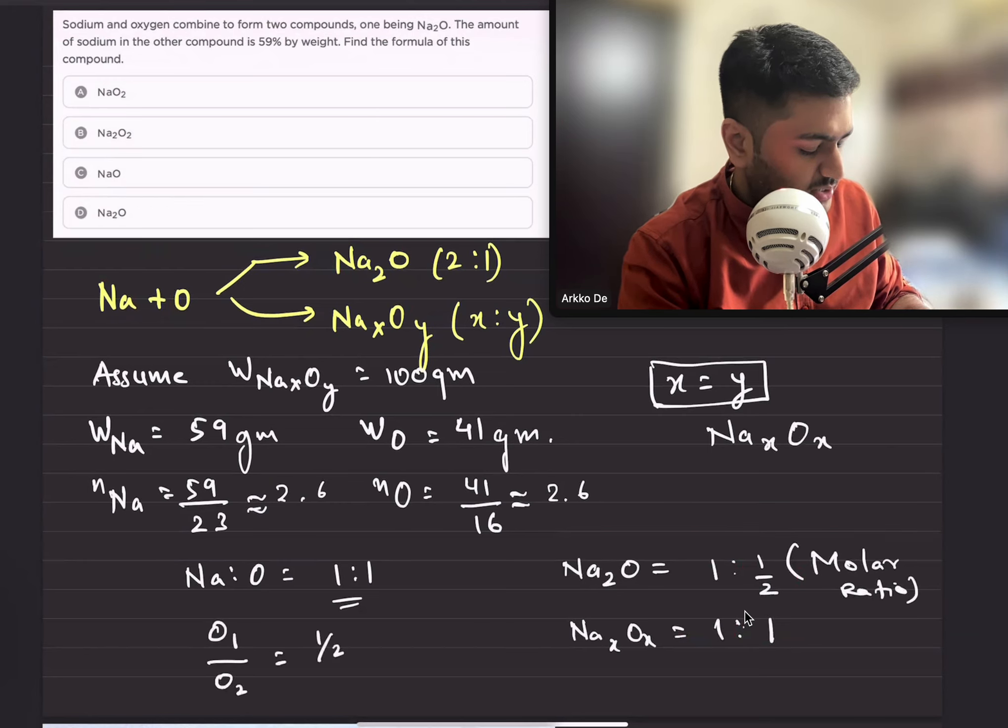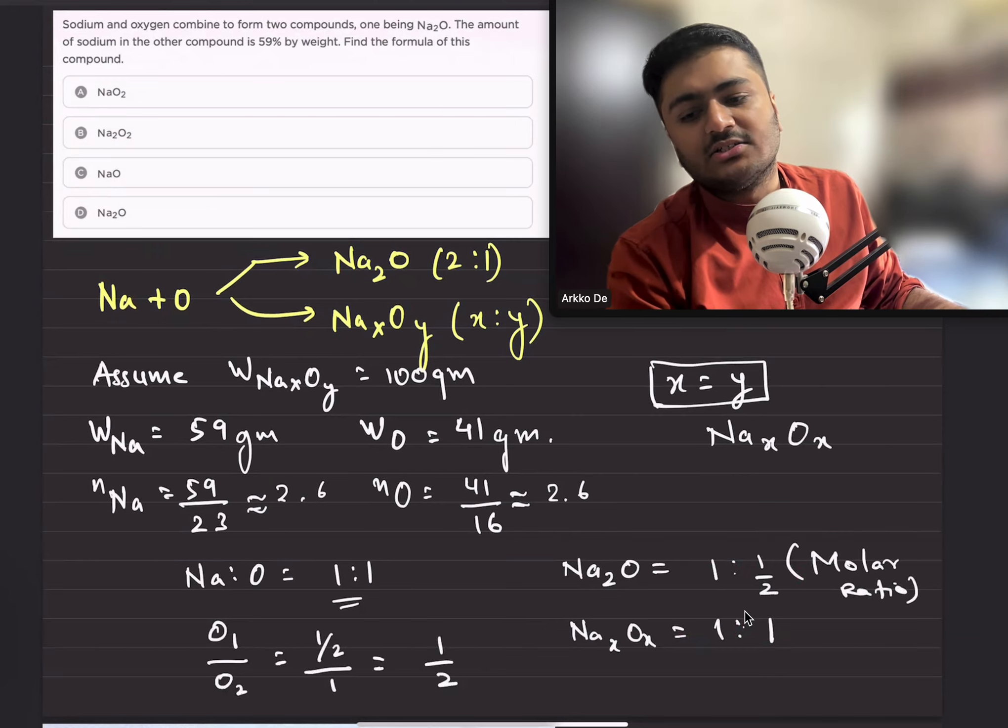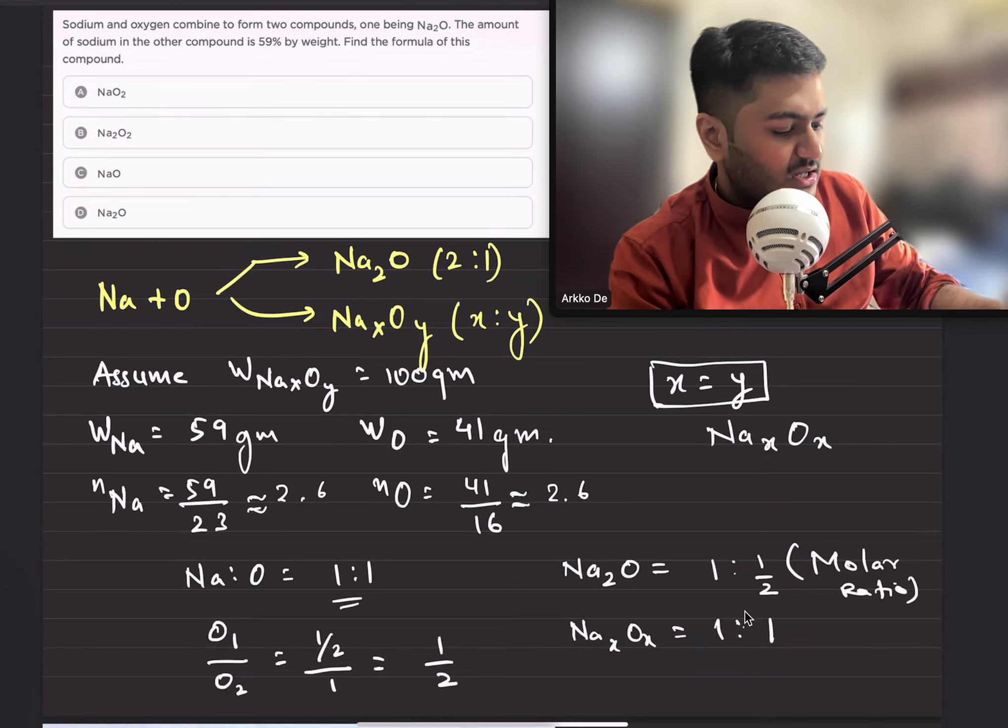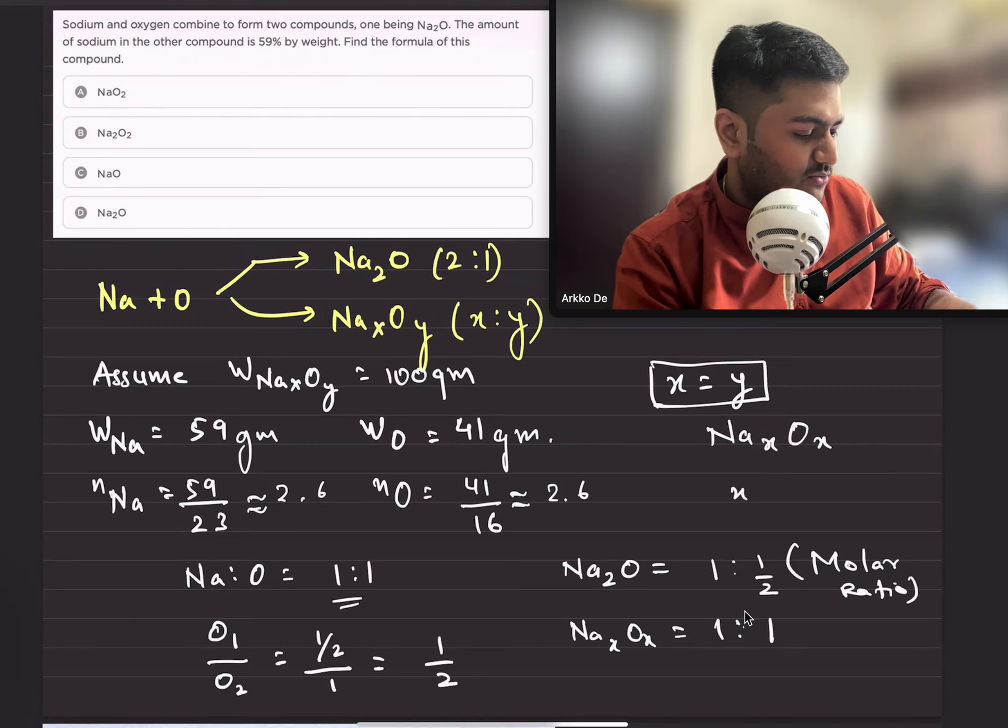So in this case, oxygen one and oxygen two are in the ratio 1:2. This means that x must be equal to 2. Therefore, the option should be B.